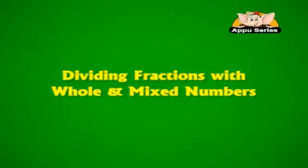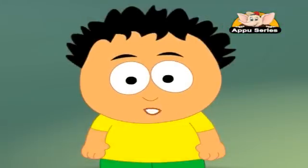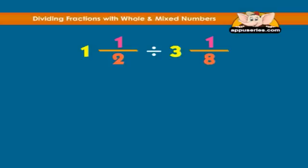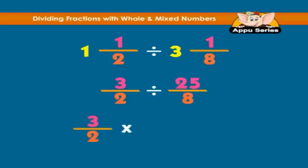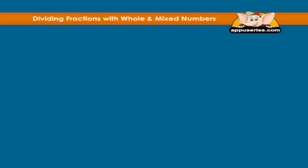Dividing fractions with whole and mixed numbers. To divide mixed numbers you should always convert to improper fractions, then multiply the first number by the reciprocal of the second. One and a half divided by three and one eighth is equal to three over two divided by twenty-five over eight. We have to take the reciprocal of the second number. Therefore we have three over two into eight over twenty-five equals twenty-four over fifty.